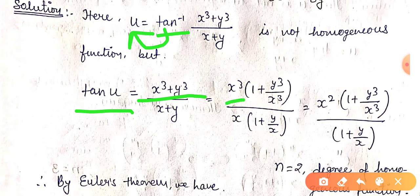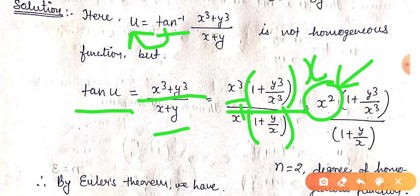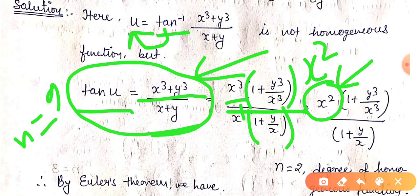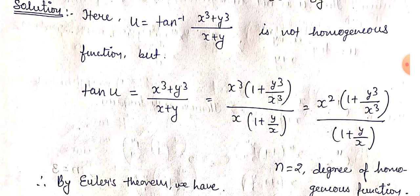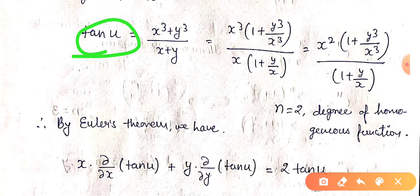Now you can see: taking x³ as the common factor in the numerator — which is the highest power — we get x³ times (1 + y³/x³) in the numerator, and x times (1 + y/x) in the denominator. So the function tan(u) is homogeneous of degree 2.